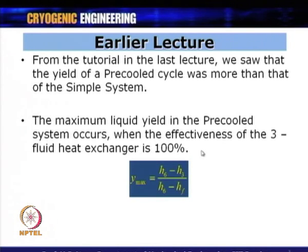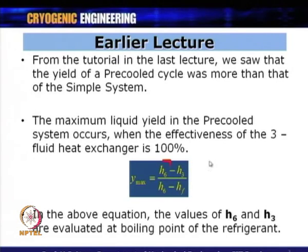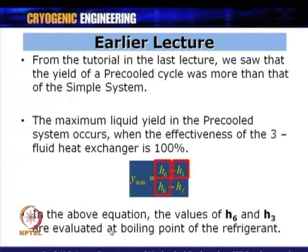The maximum yield Y-max is obtained by the enthalpy difference after the first heat exchanger: Y-max = (H6 - H3) / (H6 - HF), where the enthalpies H6 and H3 are evaluated at the boiling point temperature of the refrigerant. Only when evaluated at this boiling point temperature does the yield equal Y-max.